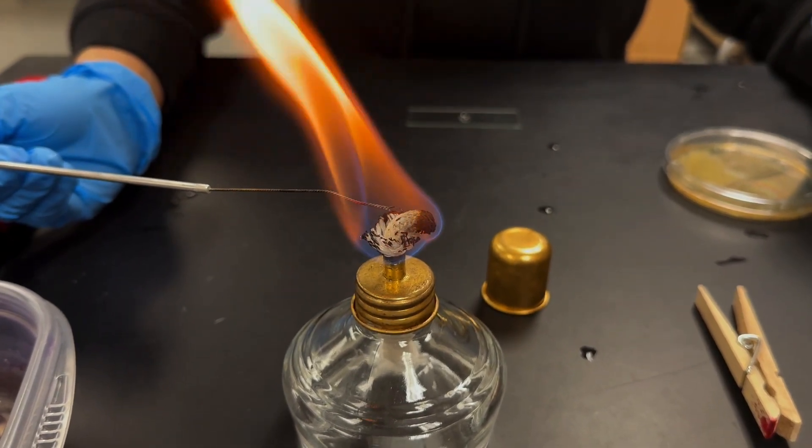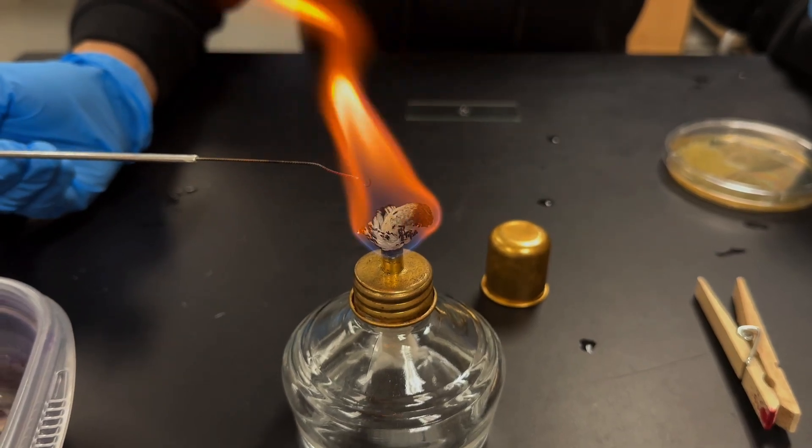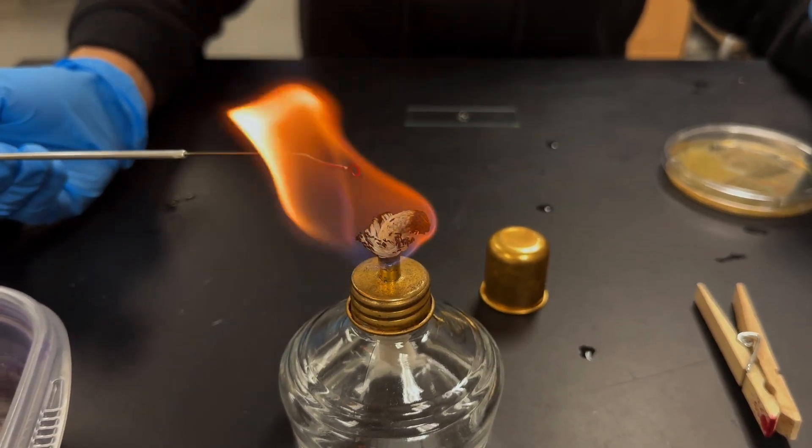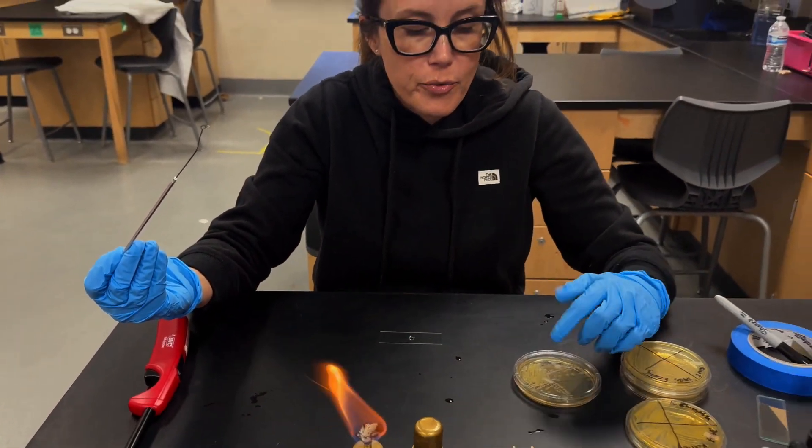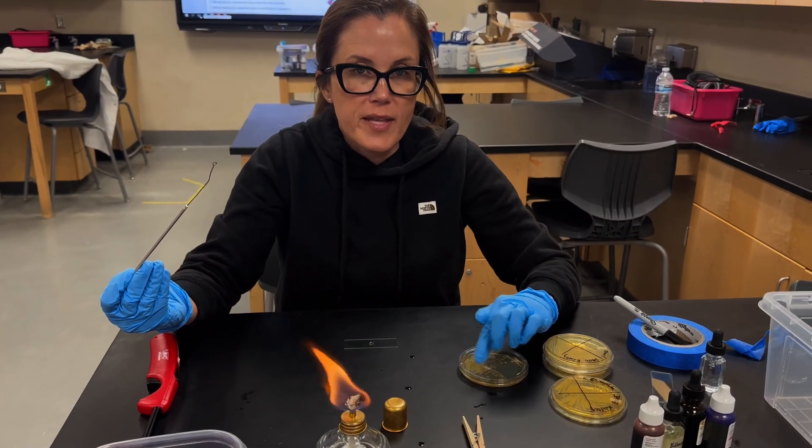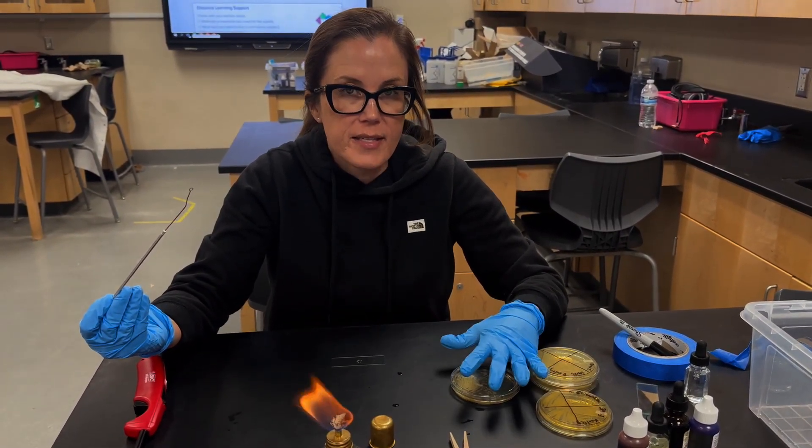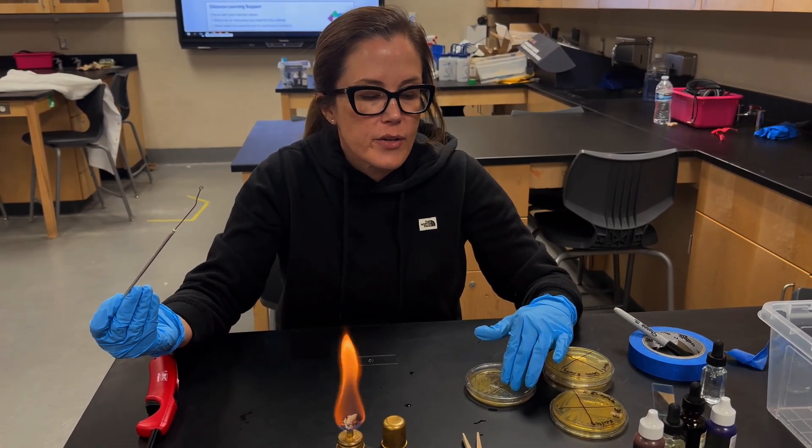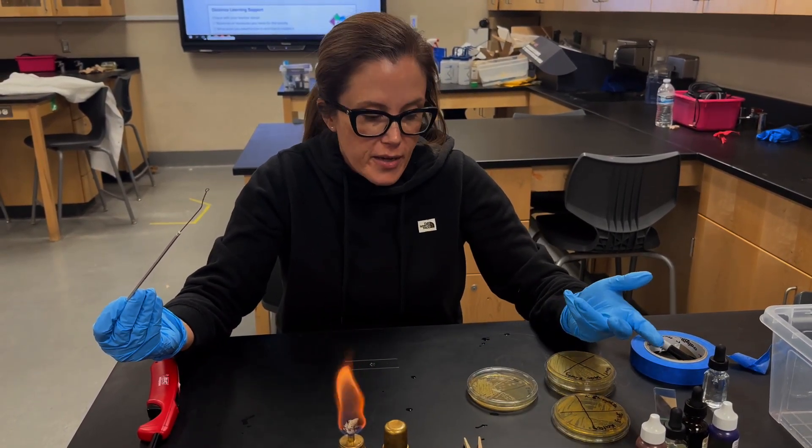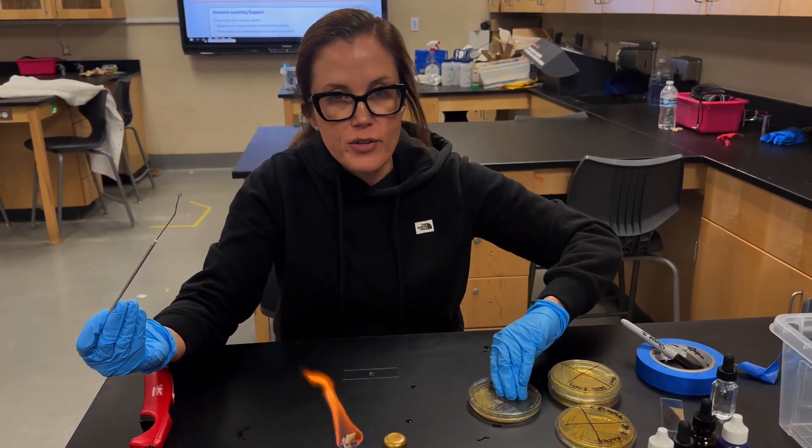So you'll sterilize your loop until it turns orange. You'll let it out of the flame, let it cool. And then what we'll be doing is removing one of the yellow colonies from the patient samples, one that you've isolated. If you and your group members weren't able to isolate a colony, you can see another group to get a colony from them. Or your teacher may have one as well that they'll be willing to share with you.